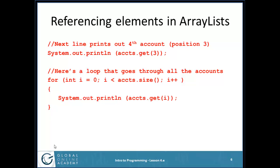Now how do I reference elements in the array list once I've put them in? If I know exactly which element I want — say I want to print out the fourth account, the one in slot three — I do System.out.println(accounts.get(3)). I could get index 0, 1, or 2; here I'm getting index 3. For a loop that goes through all accounts: for (int i = 0; i < accounts.size(); i++) { System.out.println(accounts.get(i)); } — just like looping through all elements in an array.